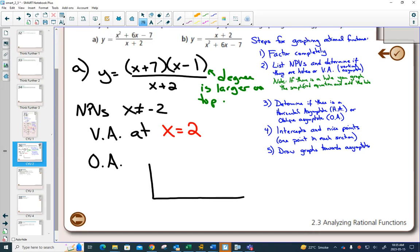Our equation was x squared plus 6x minus 7, and we're dividing by x plus 2, so you have a negative 2 up in front. Bring down the 1, multiply, add, multiply, add, multiply, add.